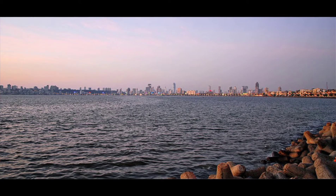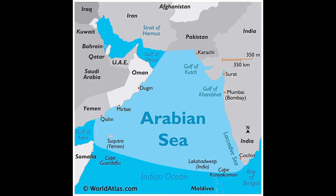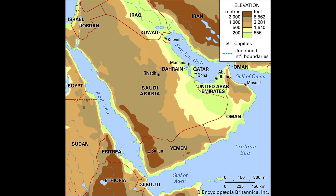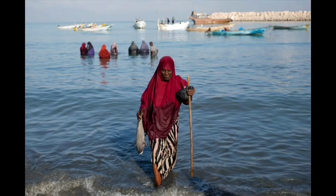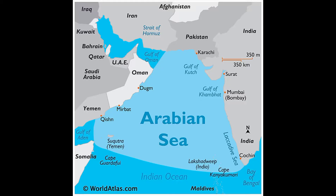The Arabian Sea is the region of the North Indian Ocean, bounded on the north by Pakistan and Iran, on the west by the Gulf of Aden and the Arabian Peninsula, on the southeast by the negative sea, on the west by the Somali Sea, and on the east by India.